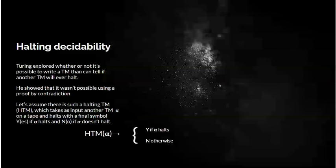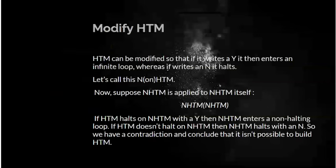Now comes the proof by contradiction, the dialectics. You modify halting Turing machine by adding extra code to it, so that if it writes a Y, it then enters an infinite loop. Whereas if it writes an N, it halts. So you add a few more instructions to your Turing machine, HTM, to get a new Turing machine, which we call non-halting Turing machine, NHTM. Now you take NHTM and apply it to NHTM itself. That is to say, you load your Turing machine with NHTM, and then as a second piece of input, you get it to read in another copy of NHTM.